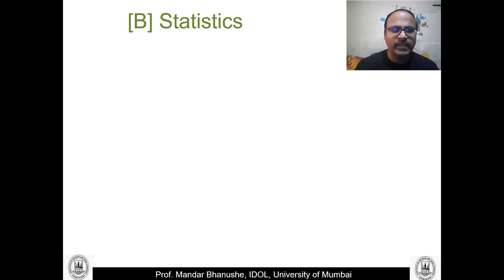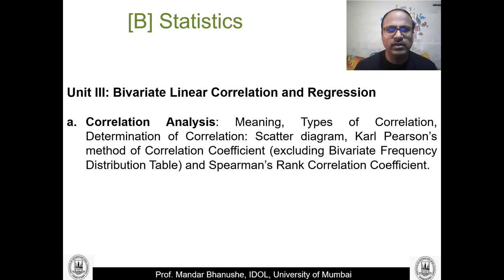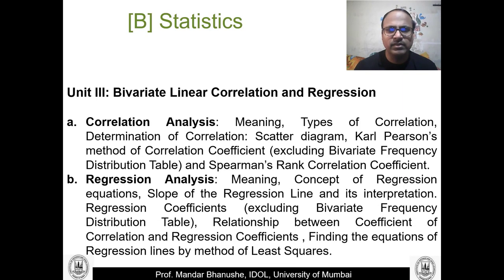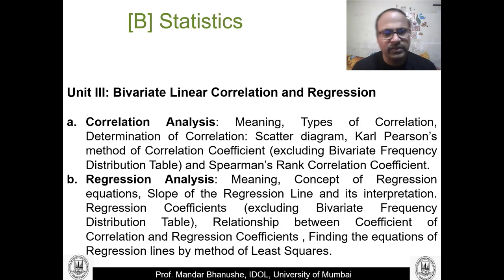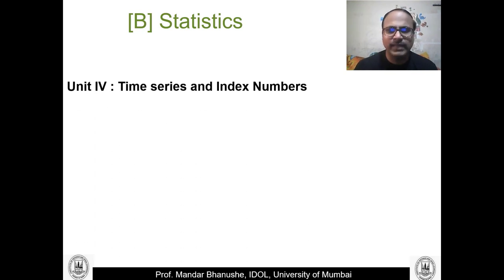In Semester 2 Statistics, Unit 3 covers Linear Correlation and Regression. We study different types of correlations, how to calculate regression equations, slopes, and constants, and the relationship between the correlation coefficient and the regression coefficient. We also learn how to draw regression lines using the Least Squares Method.